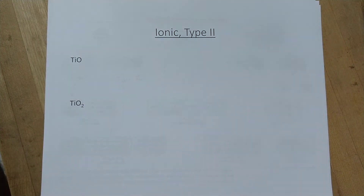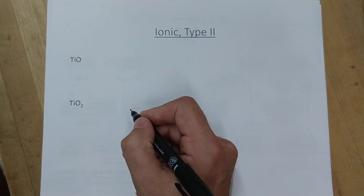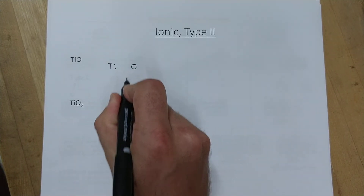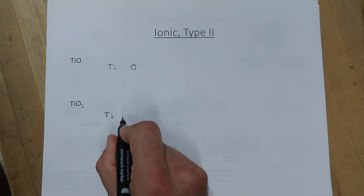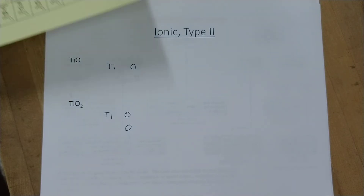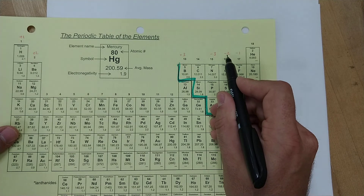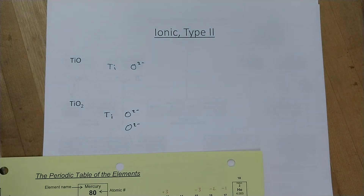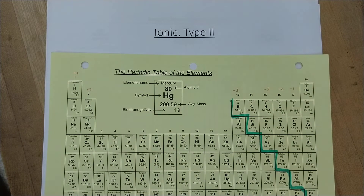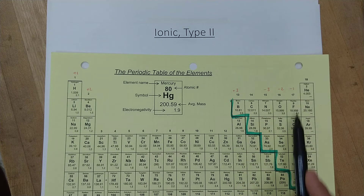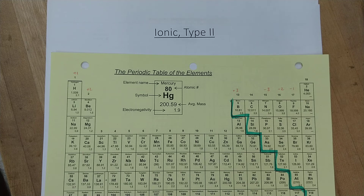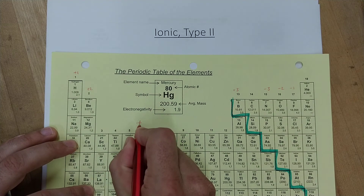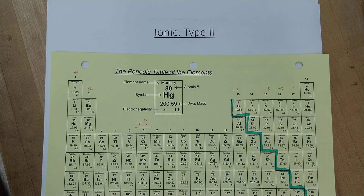In one compound, titanium bonds to one oxygen; in the other, to two oxygens. Oxygen is O²⁻. But looking at the periodic table, titanium is in the middle transition metal section where charges are variable — we don't know them in advance. For iron it can be +2 or +3; for copper +1 or +2. So we figure out titanium's charge by requiring the compound to be neutral overall.